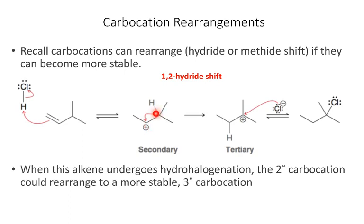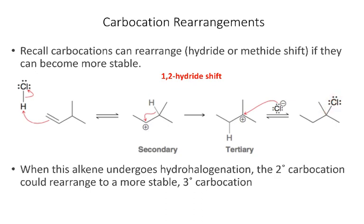If I have a hydride shift where one of the hydrogens on this neighboring carbon moves over, that moves the carbocation so that it becomes tertiary. Then when the chloride comes in and attacks the carbocation, we get the chlorine in a different position than we might have expected to begin with.